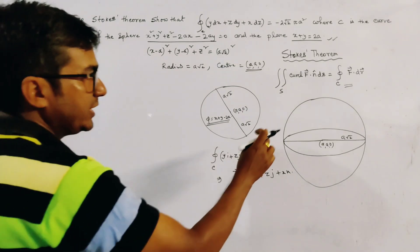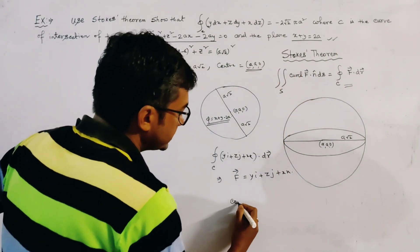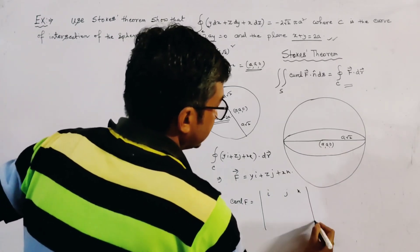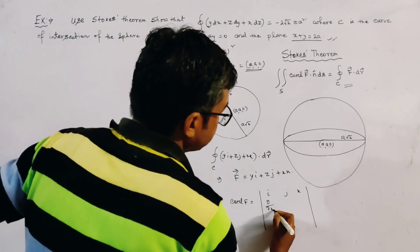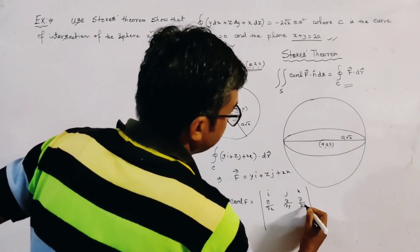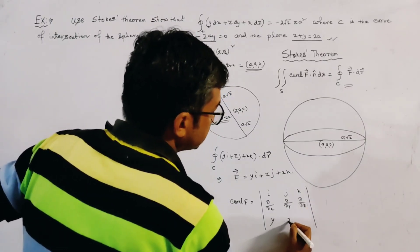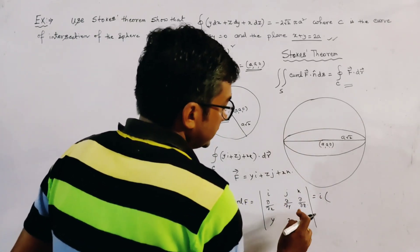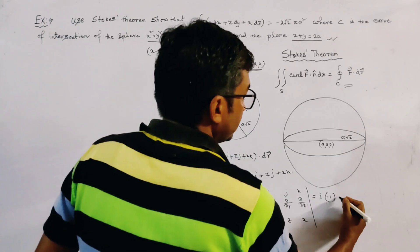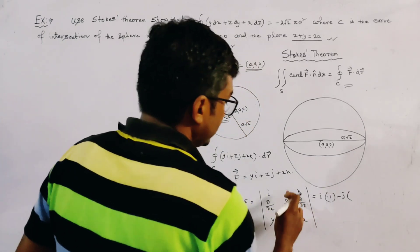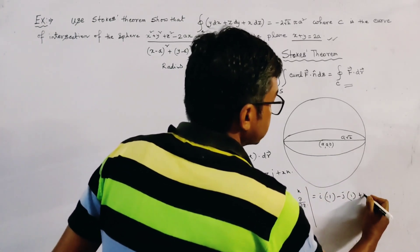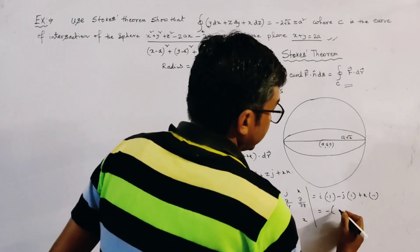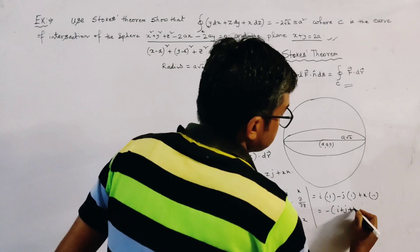We have to find the value of curl F. Curl F is the determinant with i, j, k in the first row; del/del x, del/del y, del/del z in the second row; and y, z, x in the third row. This gives i into (minus 1), minus j into (1), plus k into (minus 1). So we get curl F equals minus i minus j minus k, or minus (i plus j plus k).